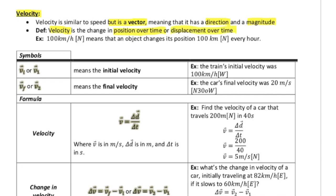So here's an example. 100 kilometers per hour north. This means that an object changes its position by 100 kilometers north every single hour. So after one hour, you've traveled 100 kilometers north. After two hours, that's 200 kilometers north. After three hours, 300 kilometers, et cetera, et cetera.